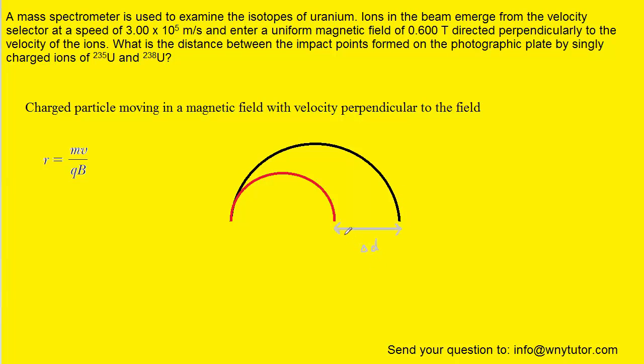And what we're actually looking for in this question is this distance right here. We can call that distance delta D because it turns out to be the difference in diameters of these two circles. Let's take a closer look at the diameters to see that.